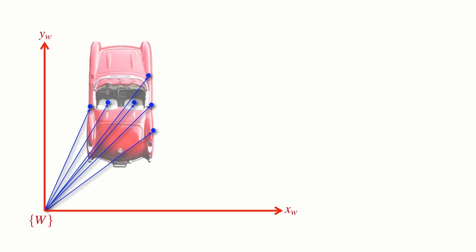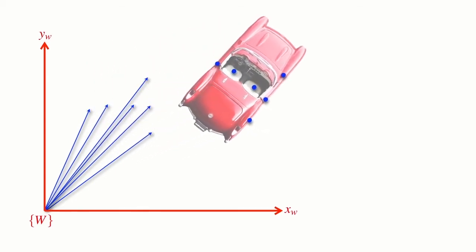Let's imagine that our car has moved — now it's over here. I could describe all of these points again in terms of vectors with respect to the origin of the world coordinate frame. But it's a little bit tedious, because the points haven't actually moved with respect to the car. The whole car has moved and now I have to redefine all the vectors again. Perhaps there's a better way.